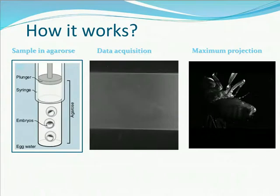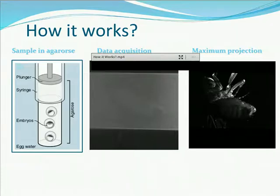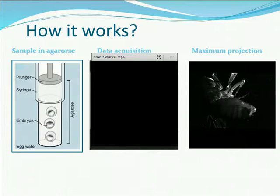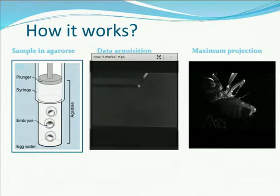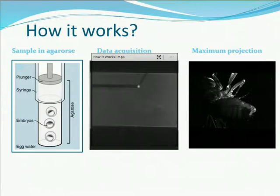The sample is embedded in a tube of agarose and freely mounted. You can also add fluorescent beads to the agarose for multi-view reconstruction. Once mounted, you simply move the sample through the light sheet — in that video, the light sheet is created by scanning a mirror. As the sample moves across the light sheet, you record information for every plane. Afterwards, you can process the data to create maximum projections, 3D volume reconstructions, or any data analysis of interest.